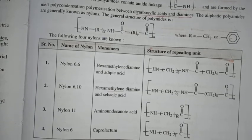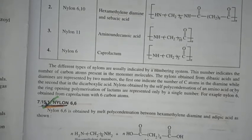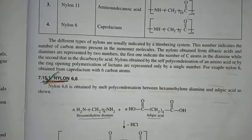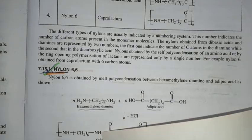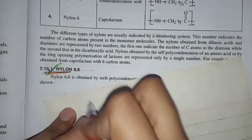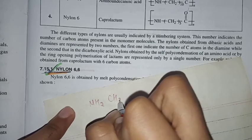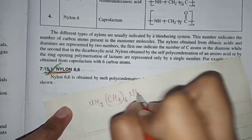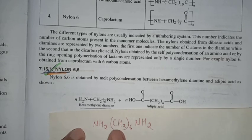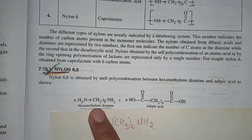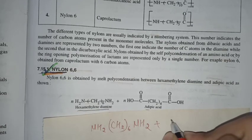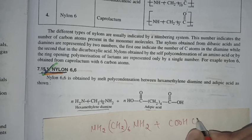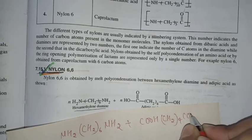Okay, so first we will see how we have nylon 6,6 is made. So the monomer is hexamethylene diamine which we will write NH2-CH2-6-NH2.